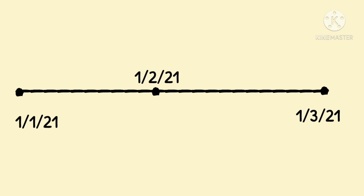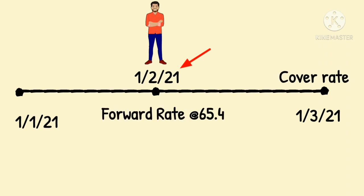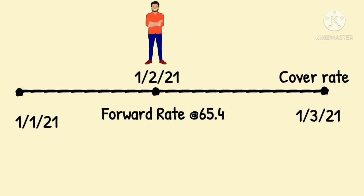But this does not happen in case of early delivery. Since the customer arrives early — let's say on 1st Feb 2021 — the bank has to fulfill the forward contract on 1st Feb 2021, and therefore these two contracts will now not cancel out each other. Thus two new contracts have to be entered, and from this only we come to the concept of swap gain or loss.